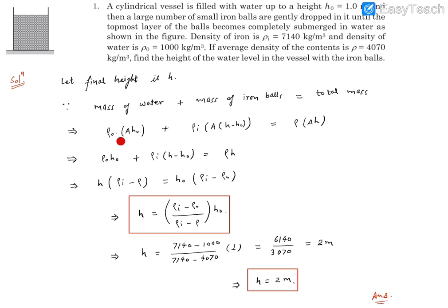Now A can be cancelled out. It becomes ρ₀ H0, and this is ρᵢ (H minus H0), and this is ρ H. From here we can take H common, so it becomes ρᵢ minus ρ. On the other side, H0 is common, giving ρᵢ minus ρ₀.